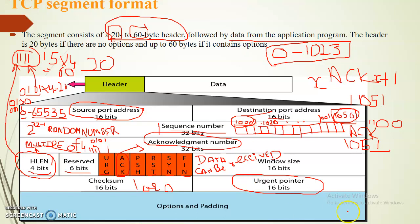In a segment, it is not necessary that all data is urgent — there may be some urgent data and some normal data. The urgent pointer value tells you where the urgent data ends. For example, if the urgent pointer value is 1020, that means from the beginning of the segment until byte 1020, the data is urgent. After that, the data in the segment is normal data.